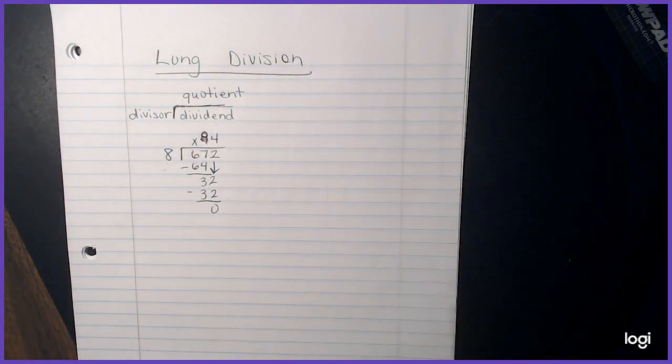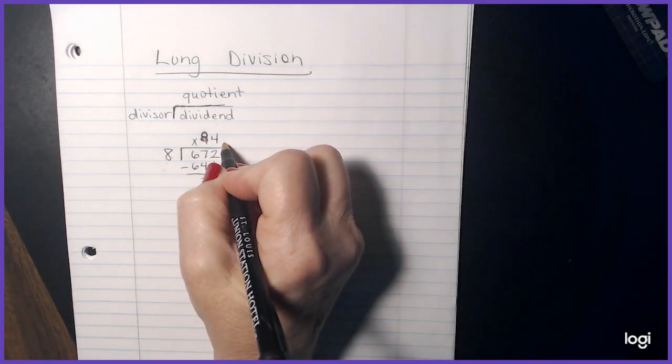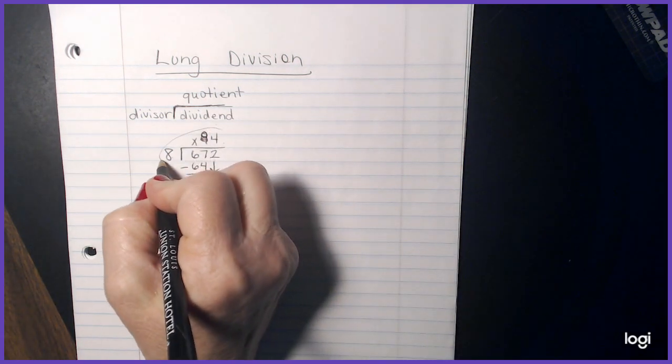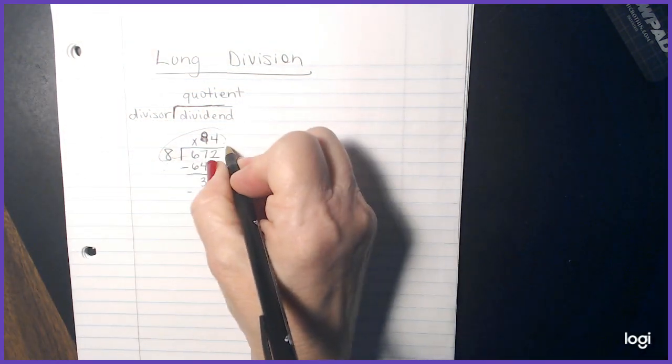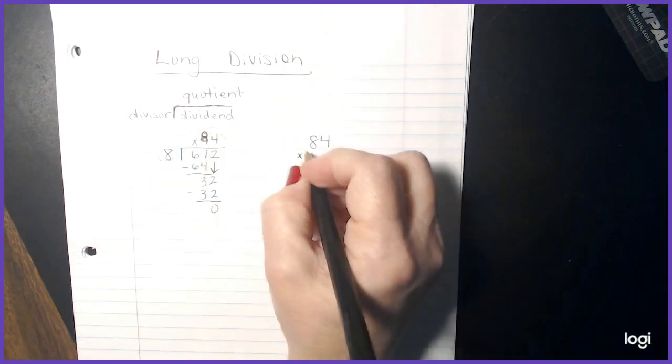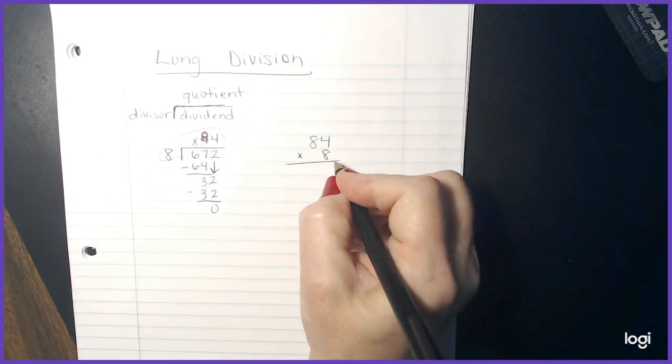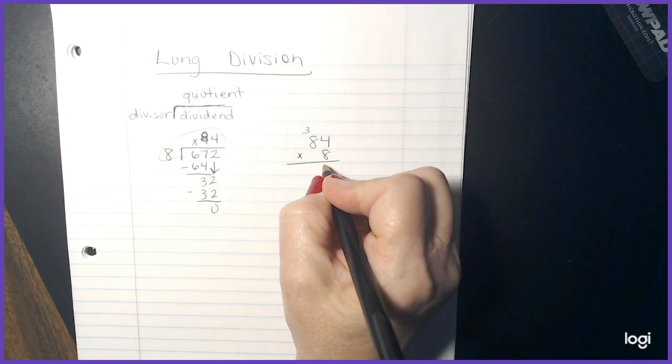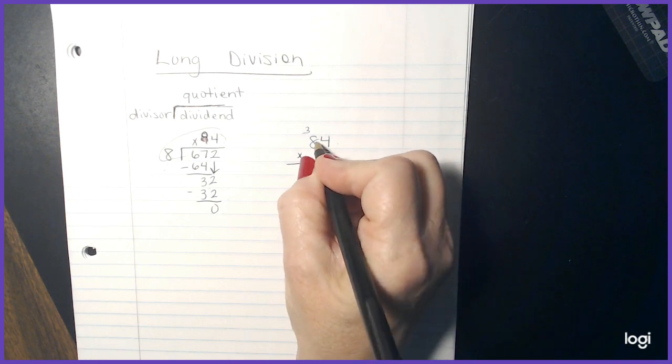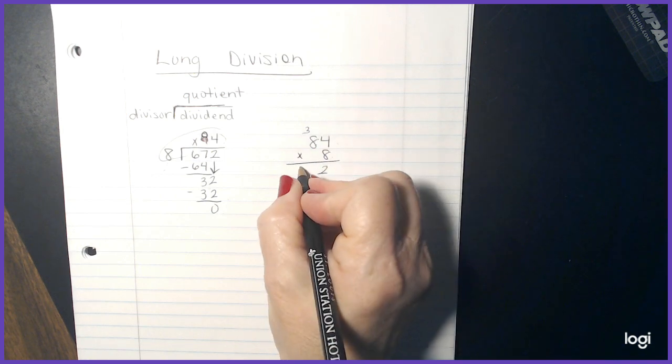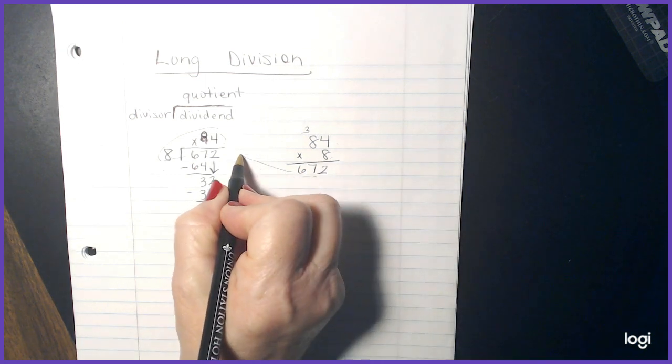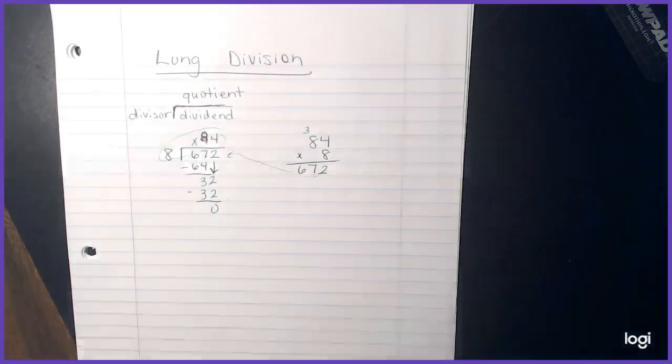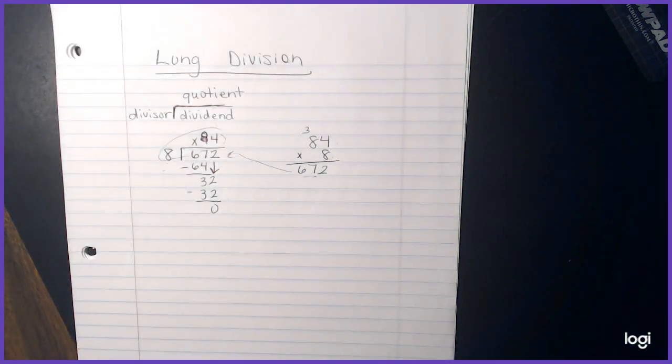Now, if I wanted to check my problem to see if this is correct, I could multiply those two. So I could come over here and take my answer, 84 times eight. Eight times four is 32. Eight times eight is 64. 64 plus three more is 67. Does this answer match that one? It does. So that means I did my division problem correctly.